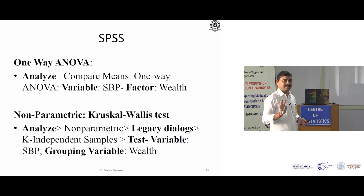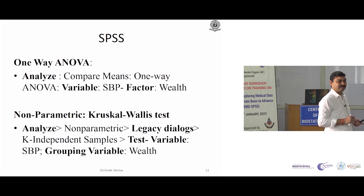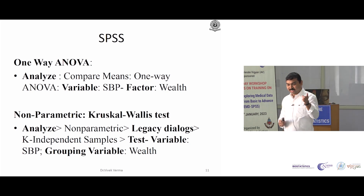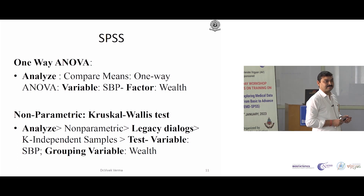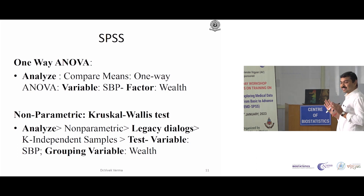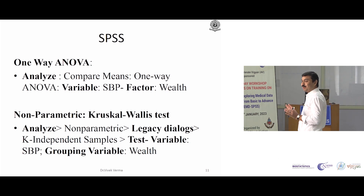Are you getting results? There are two kinds of variability: between and within. Is there any significance? No significance means wealth has no relationship with systolic blood pressure.